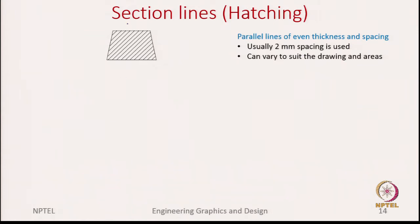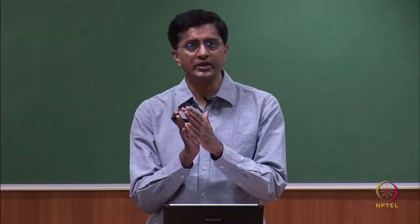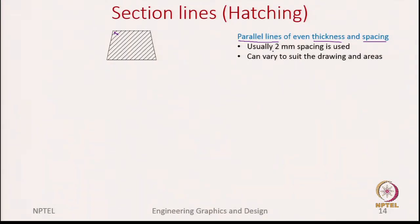First, we start by these section lines, also sometimes called hatchings. How do we draw these section lines? We draw them as parallel lines. We also need to maintain even thickness, which means all these lines should have the same thickness. Not just the thickness, even the spacing should be uniform, so this spacing between the lines should be the same throughout the section area. Usually people use 2 millimeters, but it is not a hard and fast rule.